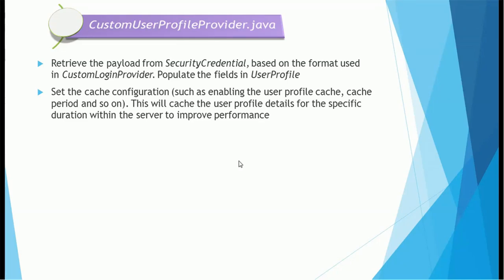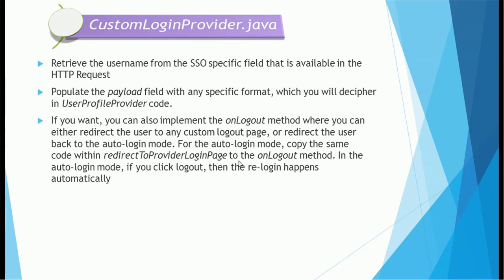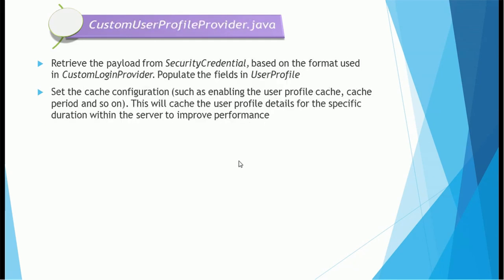The next class is the Custom User Profile Provider — a very important class. Once the request is sent from the user through SSO, the first thing that happens is the username is retrieved in the Custom Login Provider, and the payload field is populated. In the Custom User Profile Provider, we retrieve the value from the payload based on the format set in the login provider. Then we populate the user profile field, set the cache configuration for better performance — such as enabling the user profile cache and cache period — and this will cache the user profile details for a specific duration within the server.